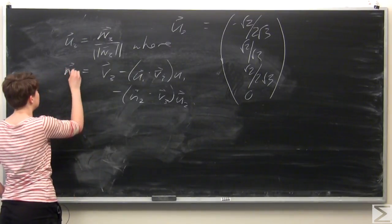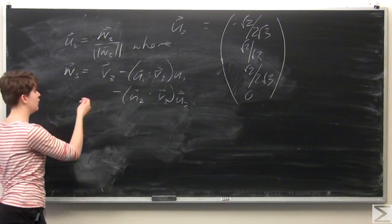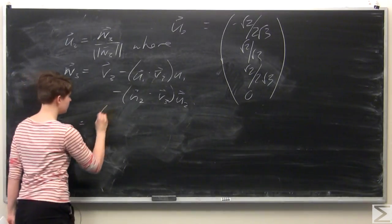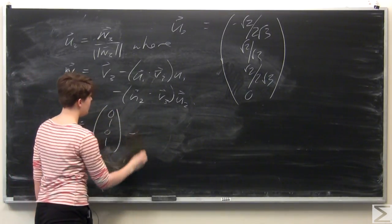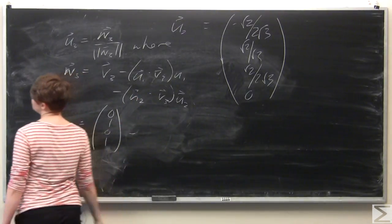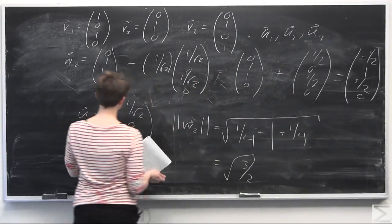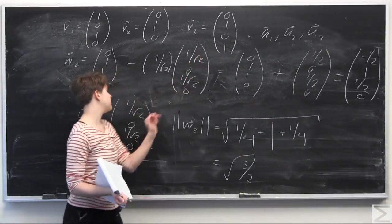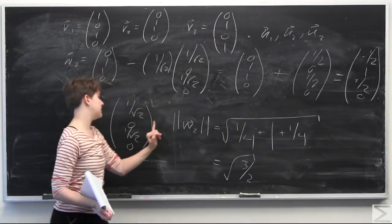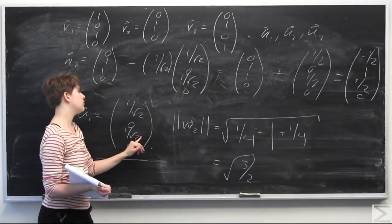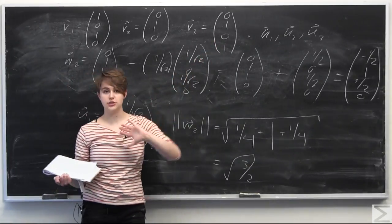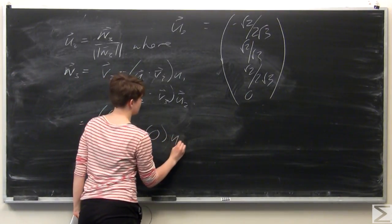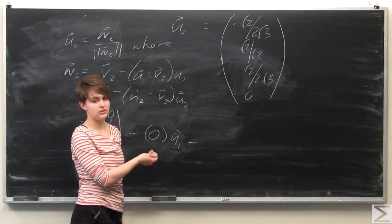We know that v3 is (0, 1, 0, 1). We subtract u1 dotted with v3. u1 is (1 over root 2, 0, 1 over root 2, 0). Computing the dot product: 1 over root 2 times 0 is 0, 0 times 1 is 0, 1 over root 2 times 0 is 0, and 0 times 1 is 0. So the entire dot product u1 dot v3 is just 0, meaning this term vanishes.